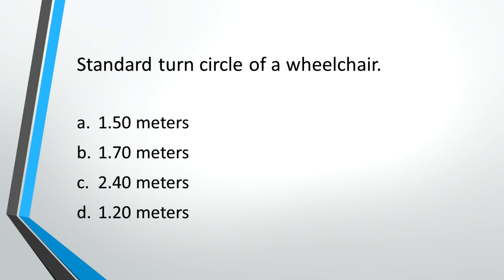Standard turn circle of a wheelchair. A: 1.5 meters, B: 1.7 meters, C: 2.4 meters, D: 1.2 meters. Answer: A, 1.5 meters.